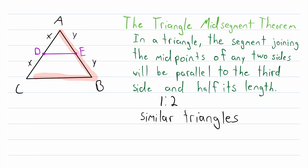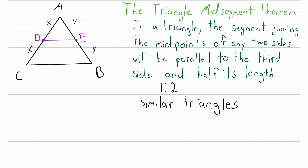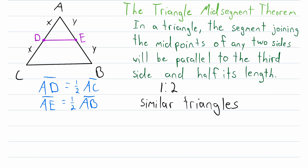Do we have two triangles in this situation? We certainly do. We have the original triangle ABC, and we also have triangle AED. So if we could show that AED is similar to triangle ABC, we might have a shot at showing that DE is half the length of CB. We can immediately notice that side AD is half the length of side AC — AD has a length of X and AC has a length of X plus X, which is 2X. Similarly, AE is half the length of AB — AE has a length of Y and AB has a length of Y plus Y, or 2Y. So we've got two sides in these two triangles that are proportional.